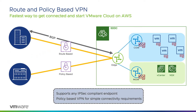The most popular option is to use a VPN, and there are two VPN options available. The first option is a route-based VPN, where you'll configure a BGP session from on-premises and terminate it on the NSX edge router in the SDDC. The second option is a policy-based VPN for customers who aren't running BGP.